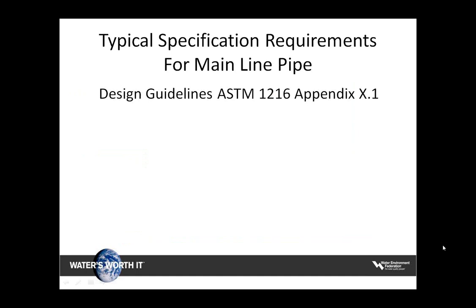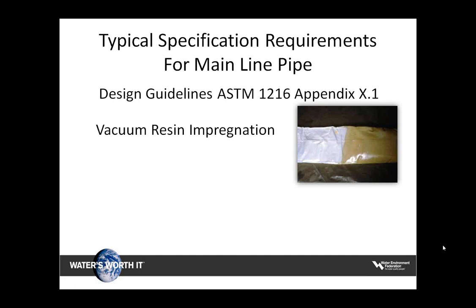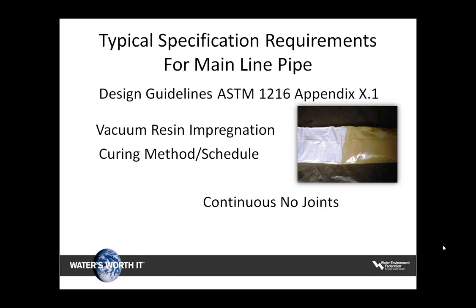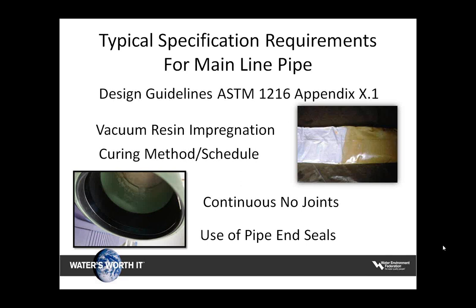Other specification items require that the installed product meets certain design criteria for a 50-year design life, as in ASTM F1216 Appendix X1 for mainline pipe. Also, vacuum impregnation using extra resin is typically included in mainline pipe specifications. Curing schedules are reviewed to ensure the liner has had sufficient time to cure and pull down. Typical requirements also include a one-piece liner with no joints, and the use of end pipe seals to ensure water does not enter the manhole from the annular space.